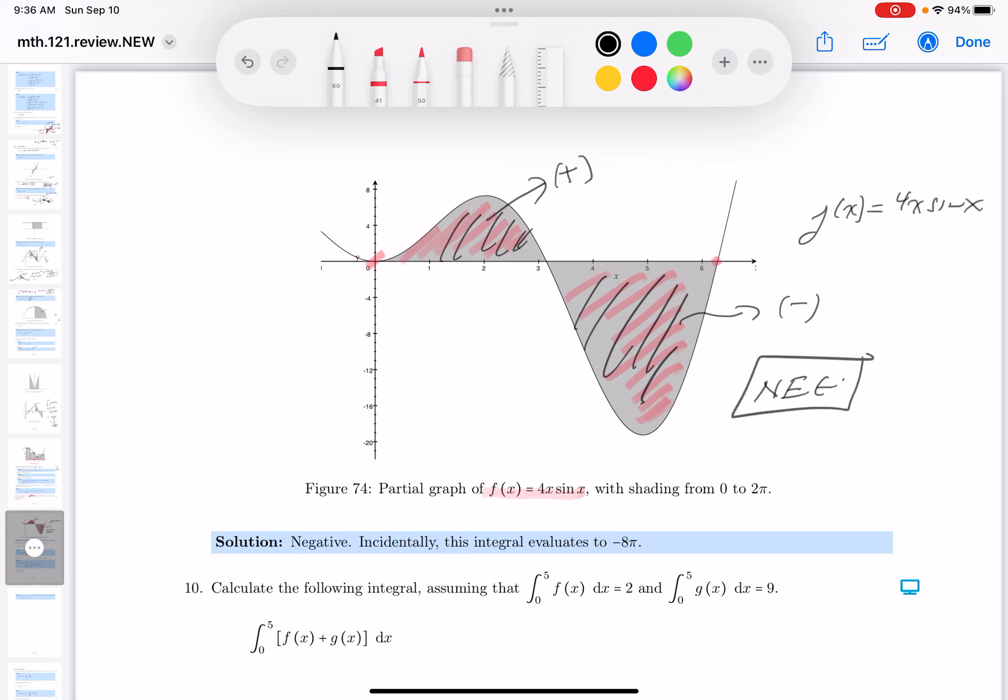Let's look at the key and see what they said. They said it's negative. They did go on to say incidentally what the number is. You're not expected to get that number. You're expected to get the sign, and the sign again is negative.